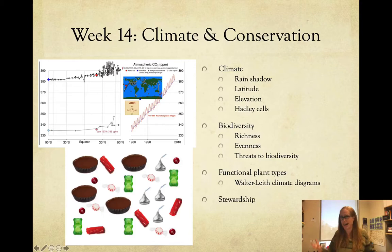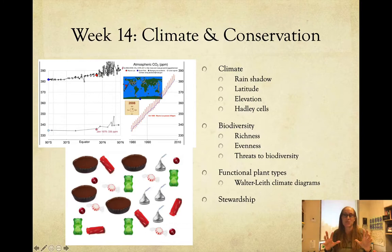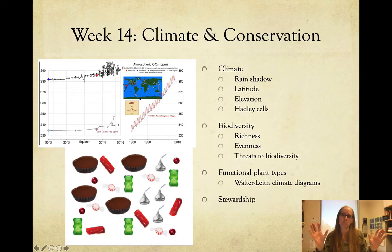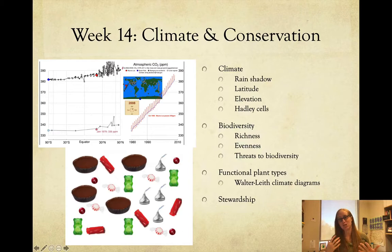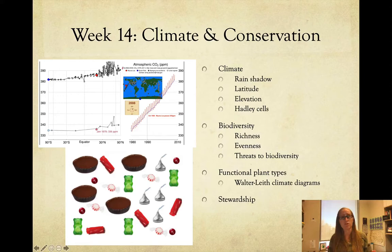Week fourteen was our last week — climate and conservation. We looked at factors affecting climate: rain shadow effect, latitude, elevation, and Hadley cells where moisture rises, drops, and creates dry areas at 30 degrees above and below the equator. We looked at biodiversity — richness and evenness — and threats like habitat destruction, eutrophication, pollution, and climate change. We applied that to functional plant types in the Lord of the Rings activity, and talked about stewardship using Easter Island as an example, discussing what science can and cannot tell you and your moral obligation.